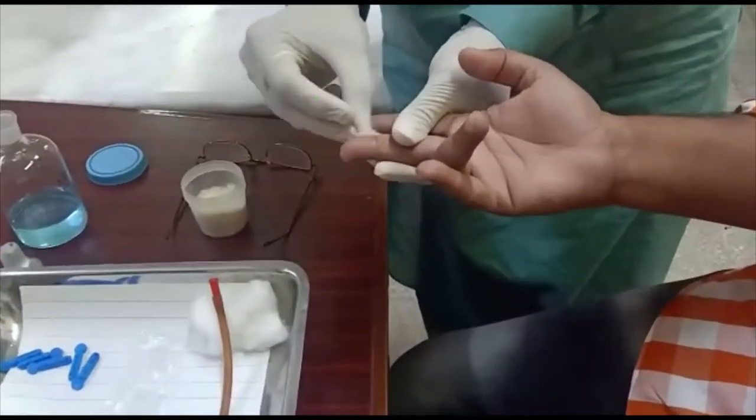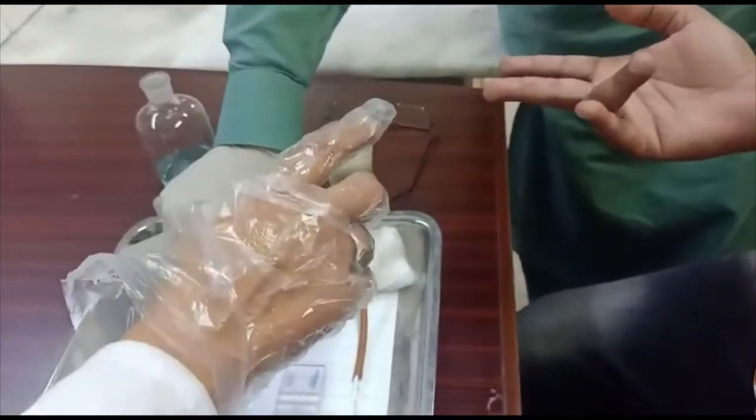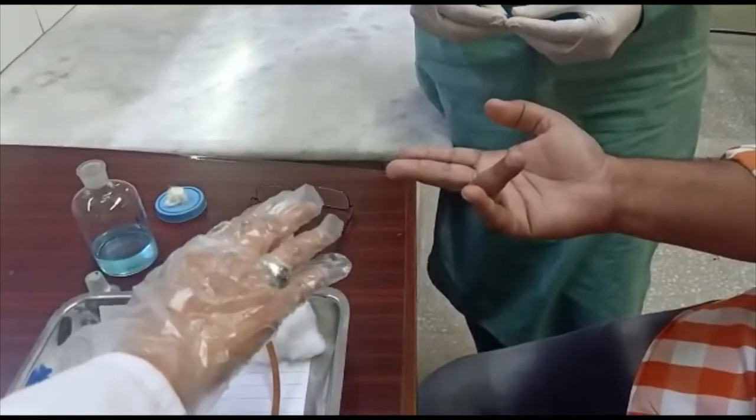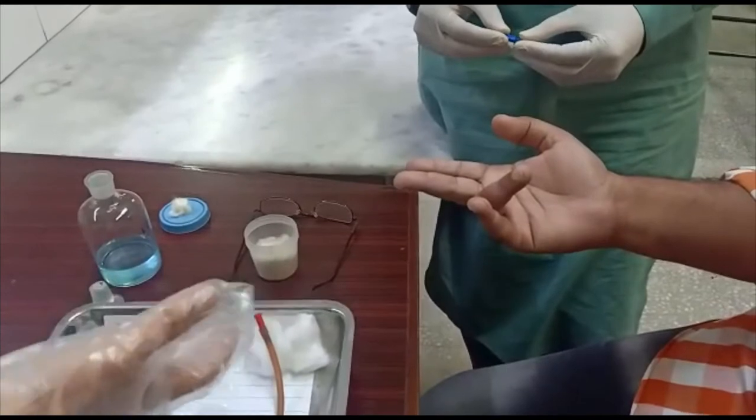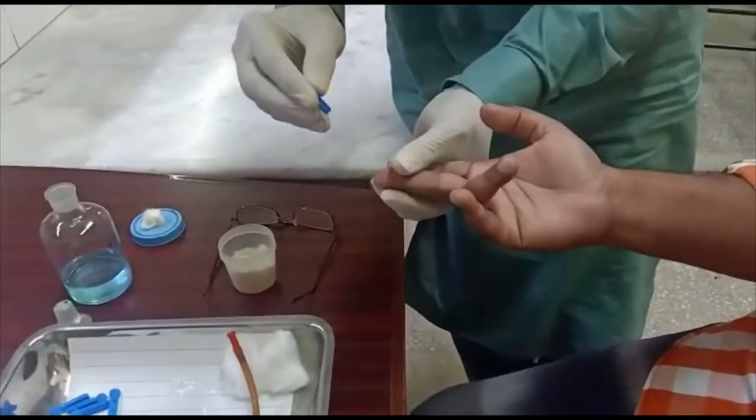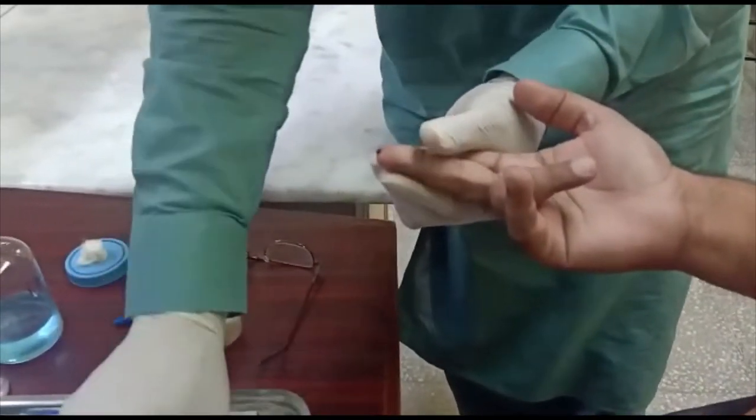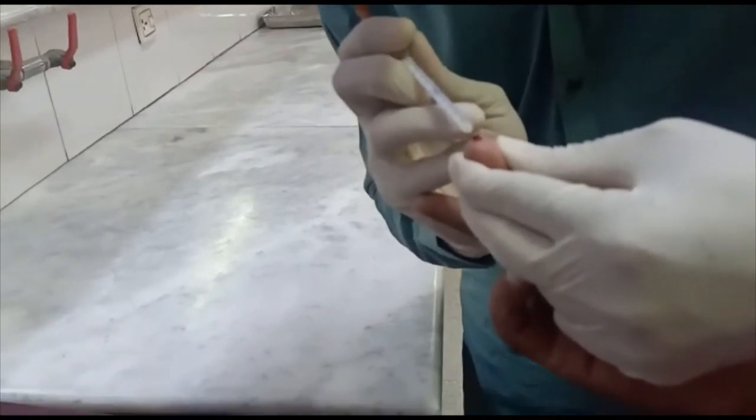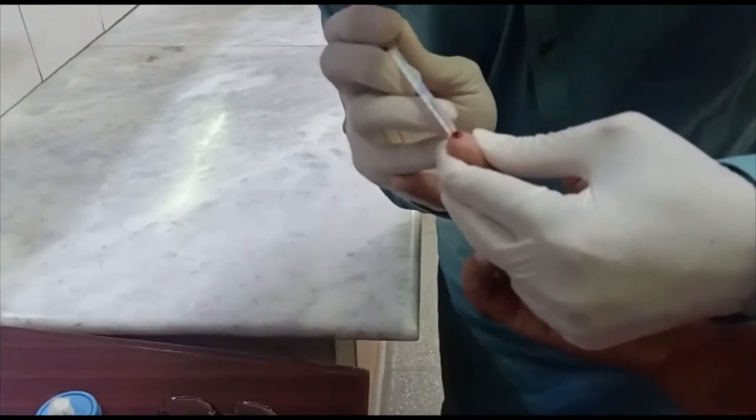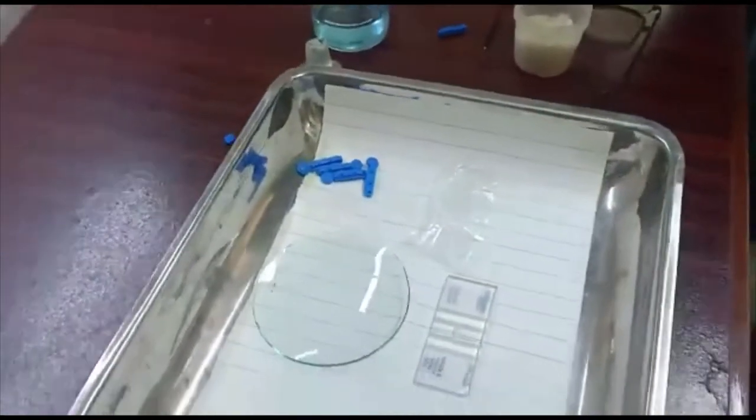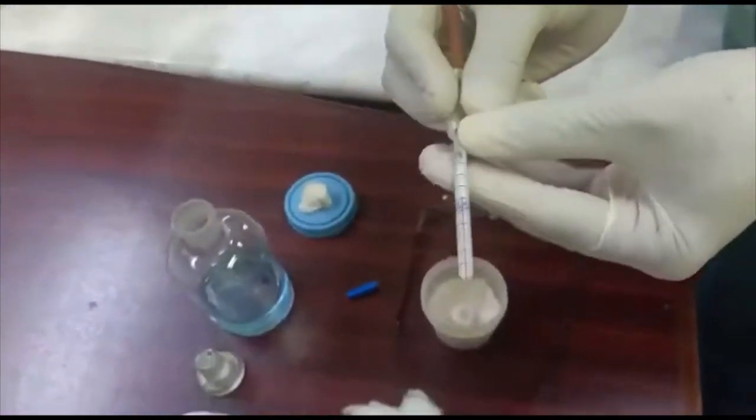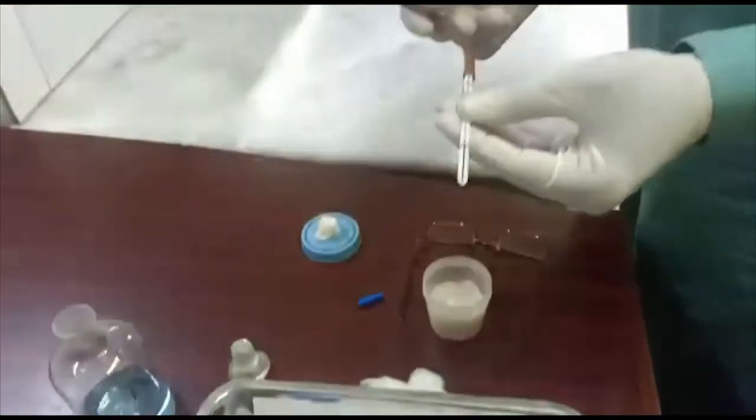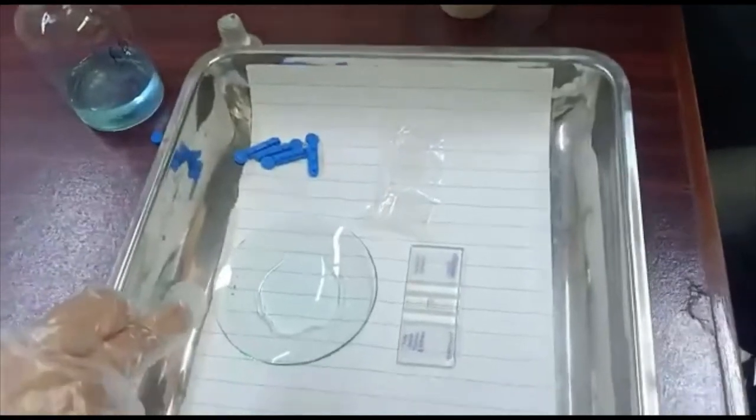We will clean the finger tip with spirit swab, then wait for some time so the spirit dries. Why should it be dried? Because if spirit is present, it can dilute the blood and exact reading will not come. Then we will prick the finger and suck the blood in the RBC pipette. We will not squeeze the finger because tissue fluid can come in the capillary tube. We will suck the blood up to the mark of 0.5 mm and immediately dip the tip in diluting fluid and suck up to the mark of 101.